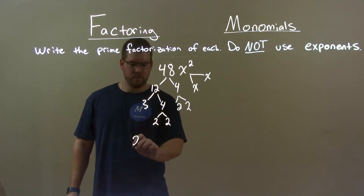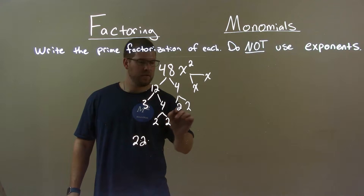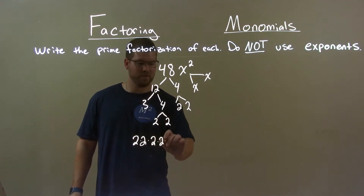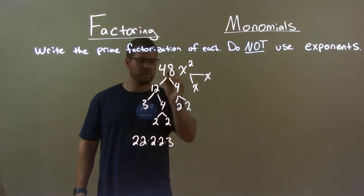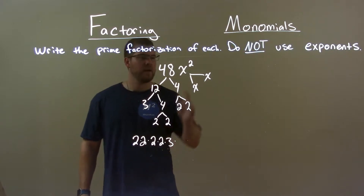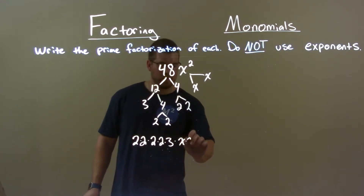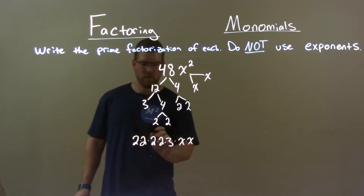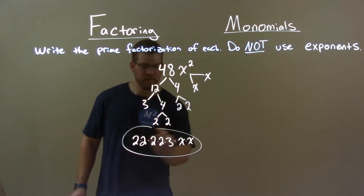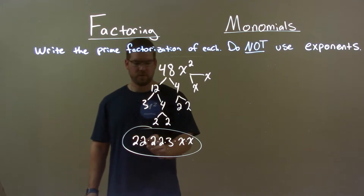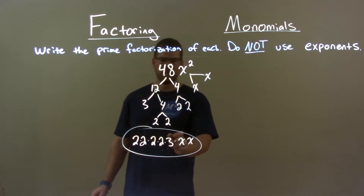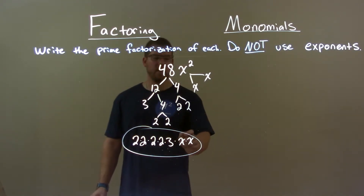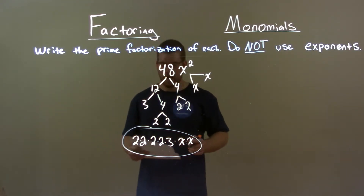So 48 — 2 times 2, we got two more, 2 times 2 — a lot of 2's there — times 3, that gives us the 48. Then x squared is just x times x. So our final answer here is 2 times 2 times 2 times 2 times 3 times x times x.